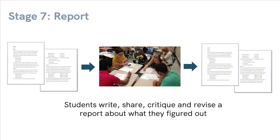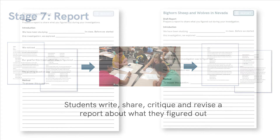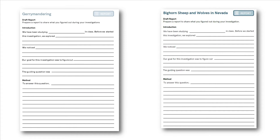During the Report stage, students write up an investigation report, share it with their peers for a peer review, and then revise the report based on that feedback and submit it to the teacher. To make this happen, students start by using a scaffolded sentence stem lab report, which is broken into three parts.